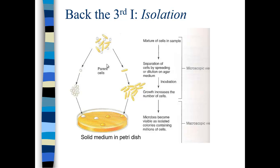Isolation becomes very important because you usually start with a mixed environmental sample. You take your mixture of cells, spread it by diluting on agar, and spread it to the point where individual cells are isolated. Each individual cell will grow up into a specific colony. In this plate you see two different colony morphologies — yellow rods and white spheres — and you can see the colonies associated with those individual microbes. By diluting and spreading them on a plate, we separate them microscopically and get individual colonies macroscopically, each corresponding with an individual species of bacteria.